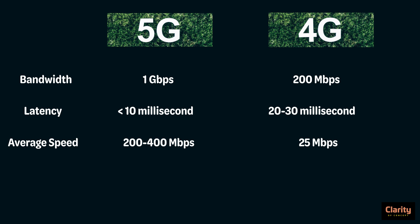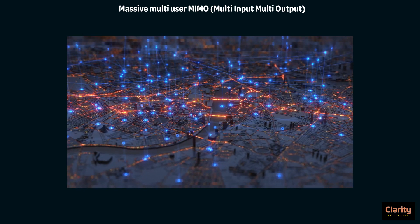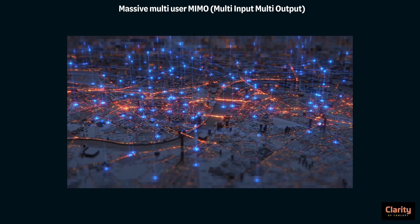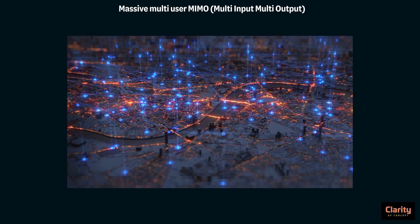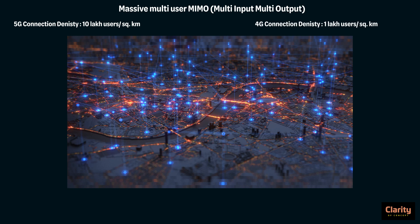Let us see some of the technologies 5G has. First is massive multi-user MIMO — multi-input and multi-output enabled network. This means 5G supports a vast number of devices connected to the internet with huge data transfer, both uplink and downlink. 5G has a connection density of 10 lakh users in just 1 square kilometer, while 4G could connect only 1 lakh devices. 5G can thus support the Internet of Things, where almost all devices such as TV, fridge, washing machine, cars, etc. are connected to the internet.